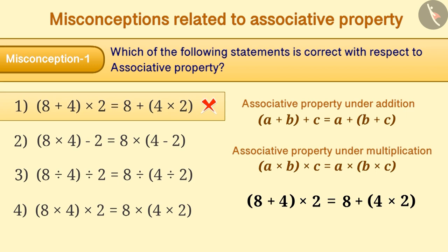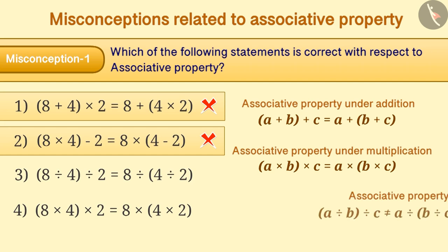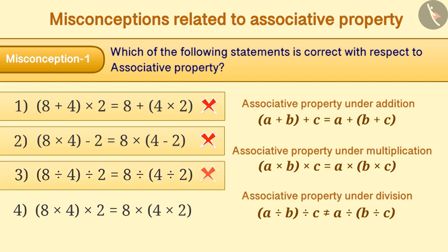Due to lack of proper understanding of associative property, option 2 is chosen. Whole numbers are not associative under division. However, many times, in order to make the operation of division easy, this property is used. With this incorrect understanding, option 3 is chosen as the answer.